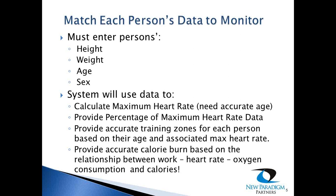The system can also calculate training zones for each person. Depending on your programming, you may want someone at 70% of max heart rate, or for high-intensity interval training, at 85% or higher. But it needs height, weight, age, and sex to calculate those zones. It also uses this information to provide a fairly accurate assessment of calorie burn.